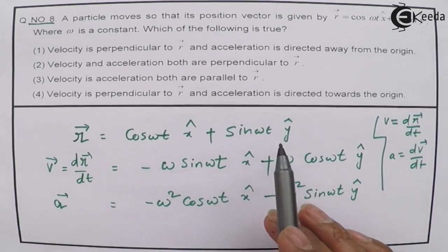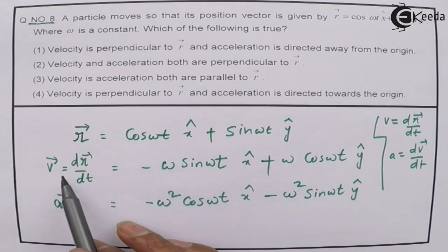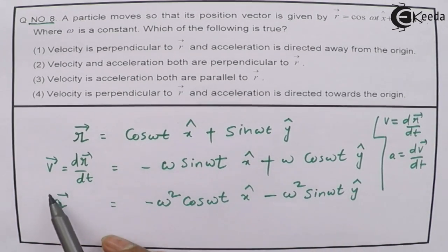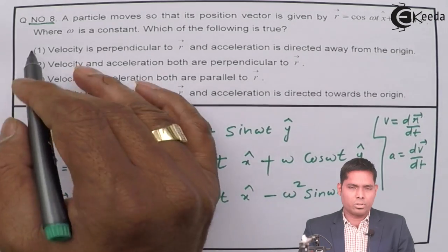The first equation is r, which is given in the question. The second and third equations are the velocity and acceleration expressions respectively. Now I have to go with the options.